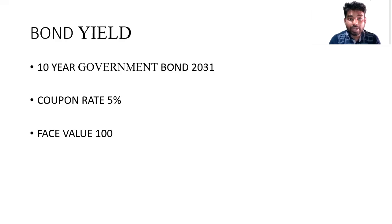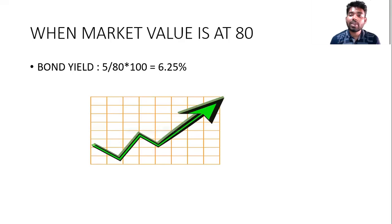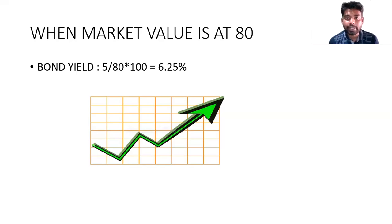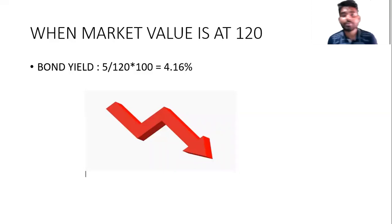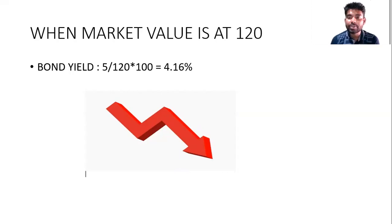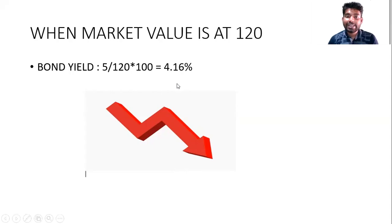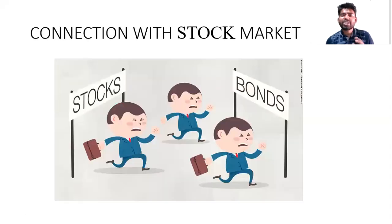Now, the same bond will trade in the secondary market. When the market value of the bond, which was issued at 100 rupees, falls to 80 rupees, the yield goes up — it will still pay five rupees but on an 80-rupee investment. Conversely, when the market value rises to 120 rupees, the yield comes down. Someone buying at 120 rupees and receiving five rupees will get an actual yield of only 4.16%. This is the inverse relationship between bond price and bond yield.